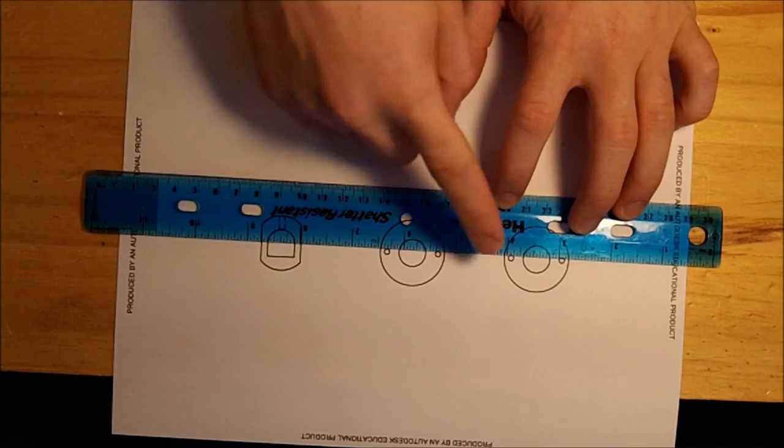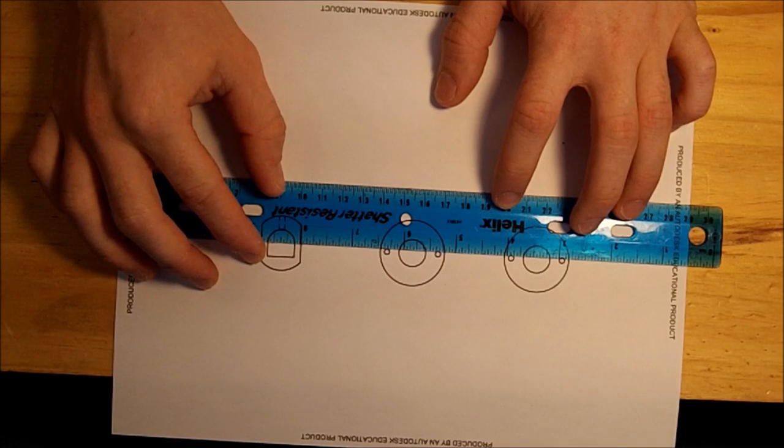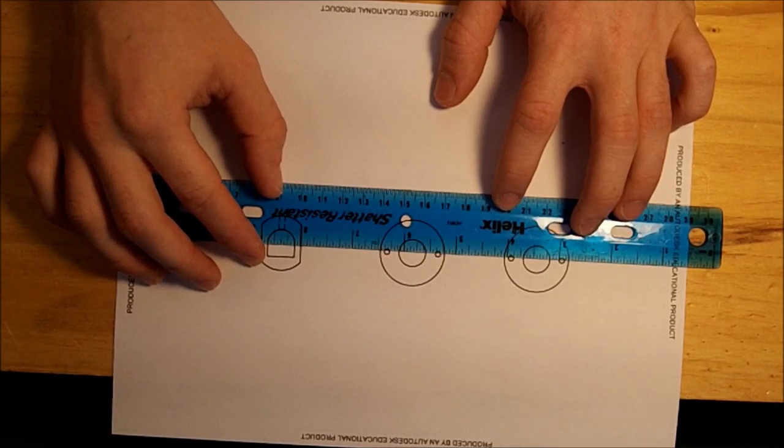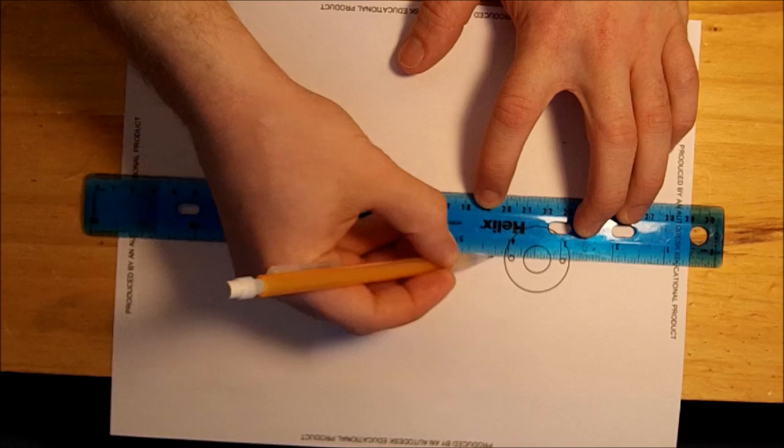First thing first, print out the catch template hosted by Daniel Beaver. I'll put a link in the description below. Now on each of the side plates, we have to draw a crosshair right through the center. So line up the small holes and draw a line right through all of it.